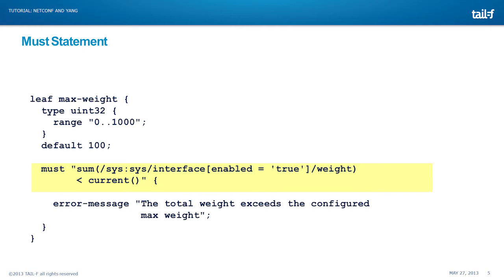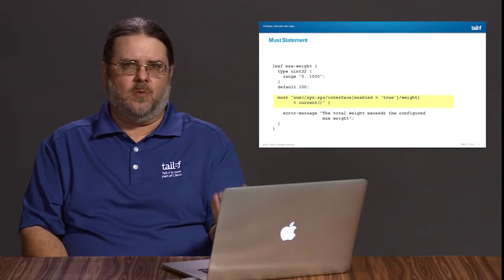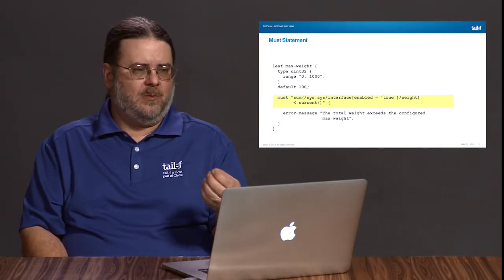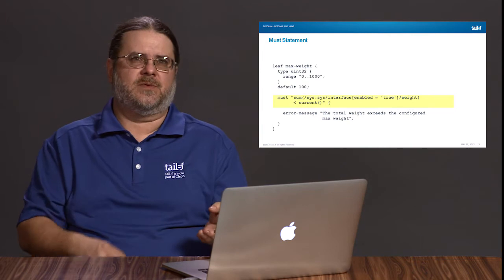Here we see a perfect example of why being able to state this precisely in our data model saves us development time. If you stop and think about what I just described — going to another table, searching through it for all enabled entries, and then only for those enabled entries taking their weight values, taking their sum, and then comparing it to the current value — think about how much code that would take you to write, whereas here we've expressed that constraint in one statement, and ConfD will automatically enforce this for you.